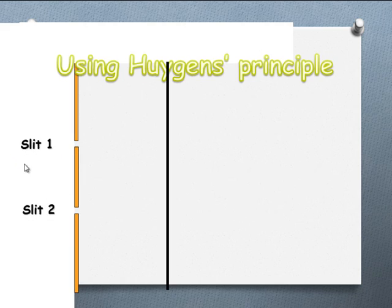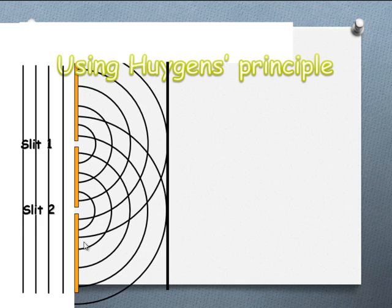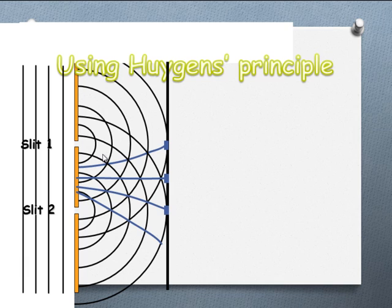Here we've got our two slits with waves coming in, and we're going to use Huygens' principle to help explain where we get constructive and destructive interference. The waves come in and diffract. Where we have our maximums, we get points of constructive interference, creating bright bands along each of those lines. In between, we have destructive interference, and that's where we get our dark bands.